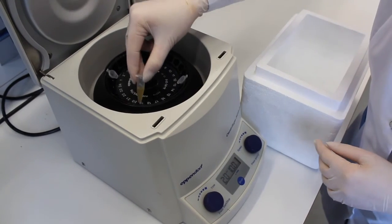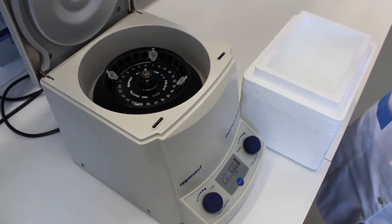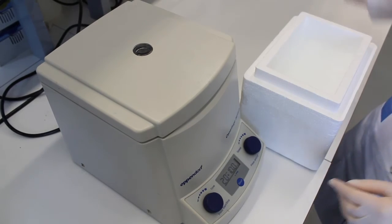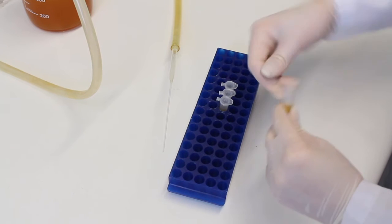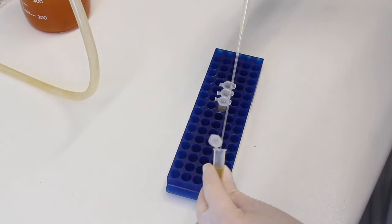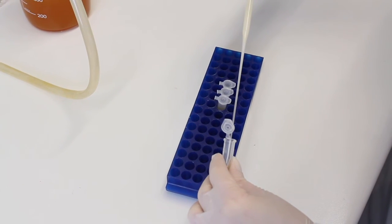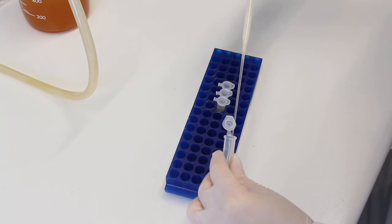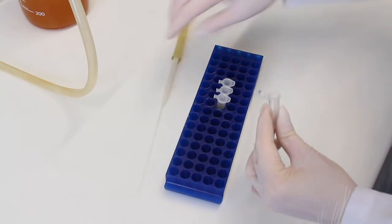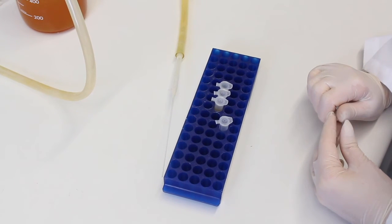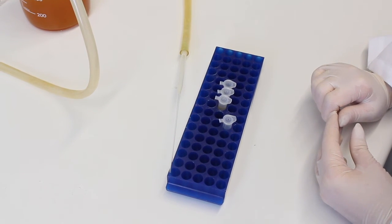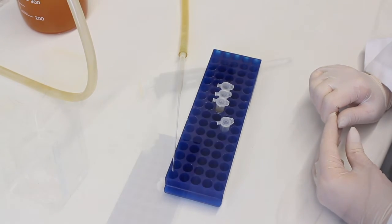The centrifugation can be performed at 4 degrees or at room temperature. Discard the supernatant. After that centrifuge for two additional minutes at 1500G to eliminate entirely the supernatant.